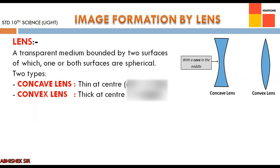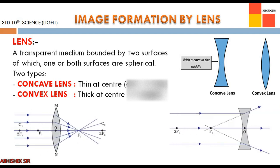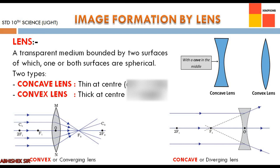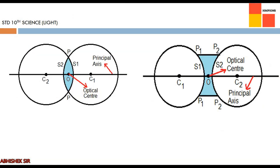From the figure, if the lens is thin at the center — if there is a cave in the middle — it is called a concave lens. If it is thick at the center, it is called a convex lens. In convex lens, when light rays come from one side they converge to a single point, so it is also called a converging lens. In concave lens, the light rays from one side tend to diverge away, so it is called a diverging lens.